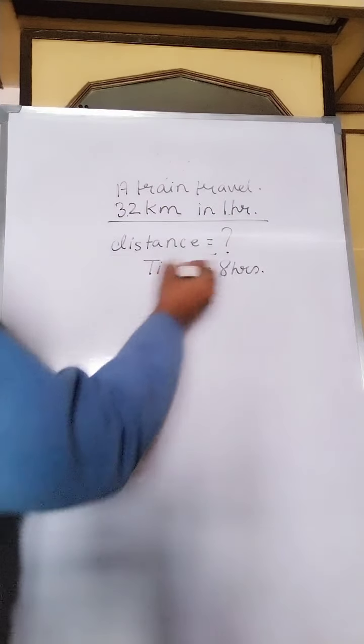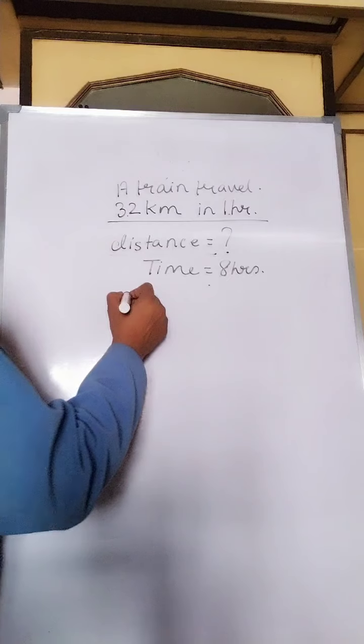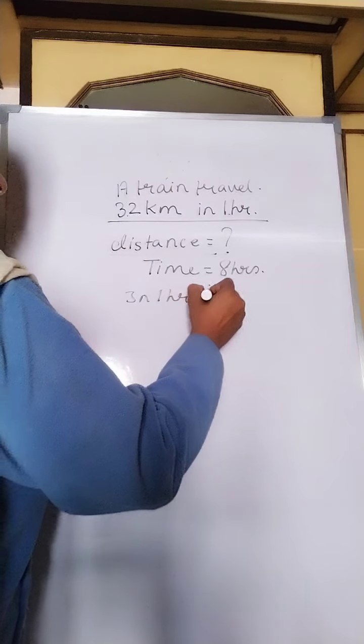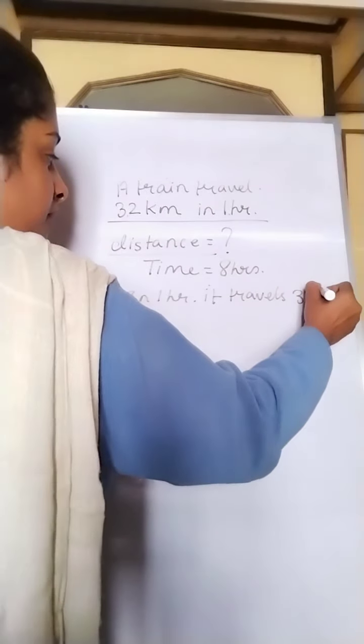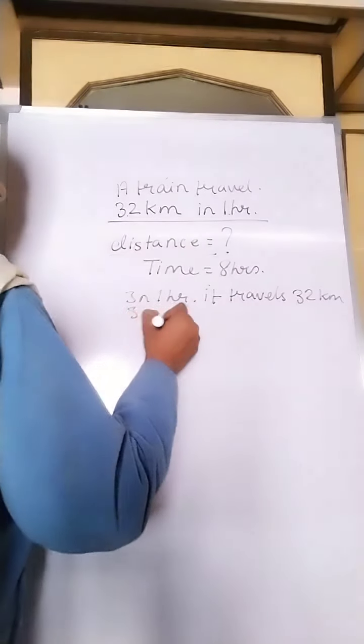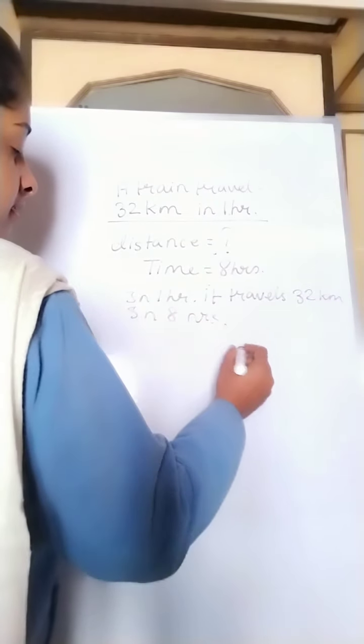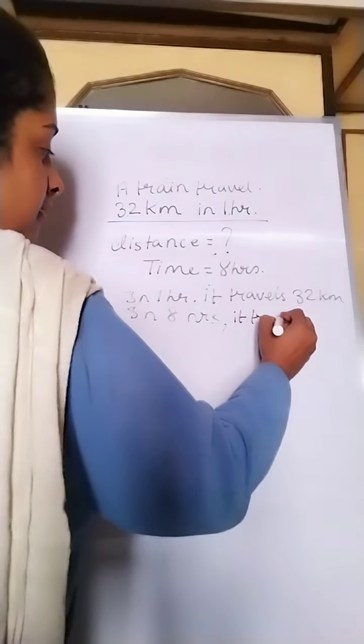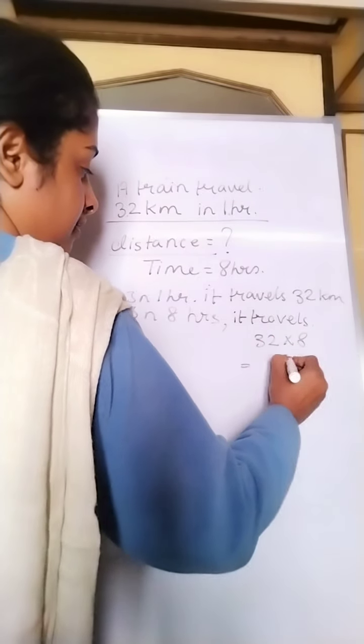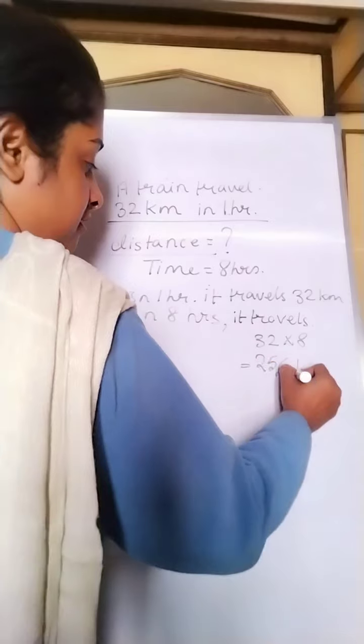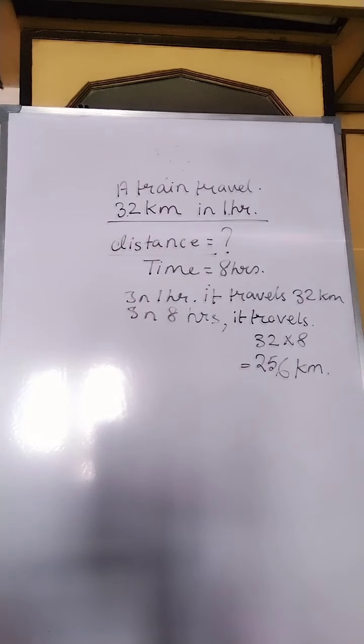So 1 hour 32 km, 8 hours how long? In 1 hour, it travels 32 km. In 8 hours, it travels 32 into 8, 256 km. This is the solution and these are the objective sums.